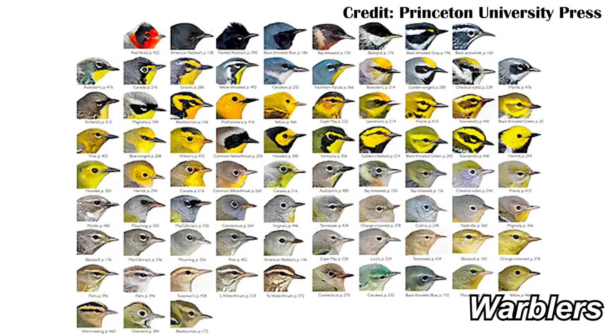Meanwhile, with modern research you have things like the warbler species complex, where just a few genes can vastly change the appearance of a warbler. So which ones are their own species and which ones aren't? It depends on how you're defining a species. There are things like what paleontologists use, which is the morphological species concept. Basically, if the animals don't have the same morphology in their bones, they're probably different species.